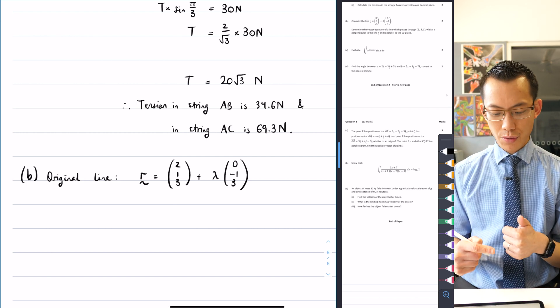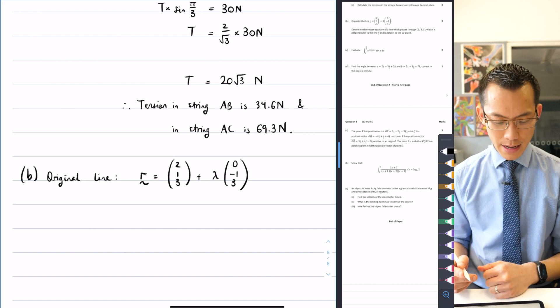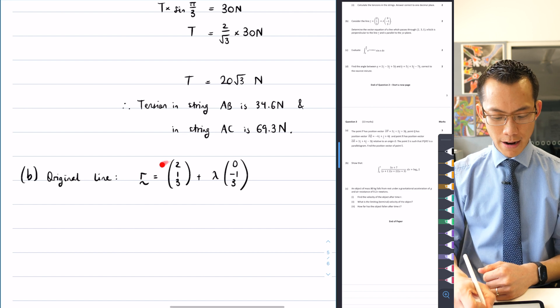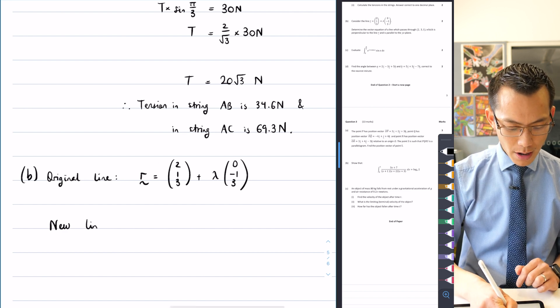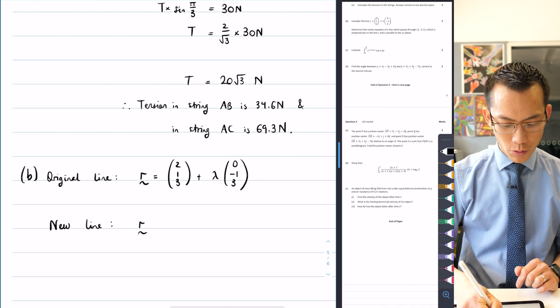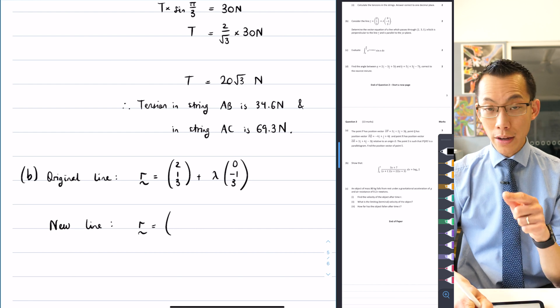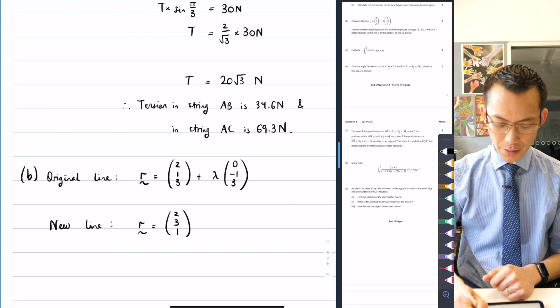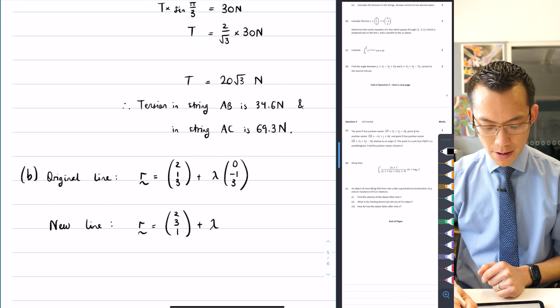Now the new line needs to pass through 2, 3, 1. And so the first easy thing to say is, oh, okay, 2, 3, 1 is going to be the position. So I can say the new line is going to have to be r equals, and I'm going to get onto, an easy way to get onto the point 2, 3, 1 is just to make that my position vector, 2, 3, 1. Now, I then have to work out the direction vector, and this is the tricky part.